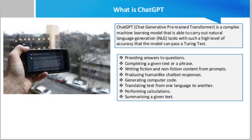ChatGPT, or Chat Generative Pre-Trained Transformer, is a complex machine learning model that is able to carry out natural language generation (NLG) tasks with such a high level of accuracy that the model can pass a Turing test.